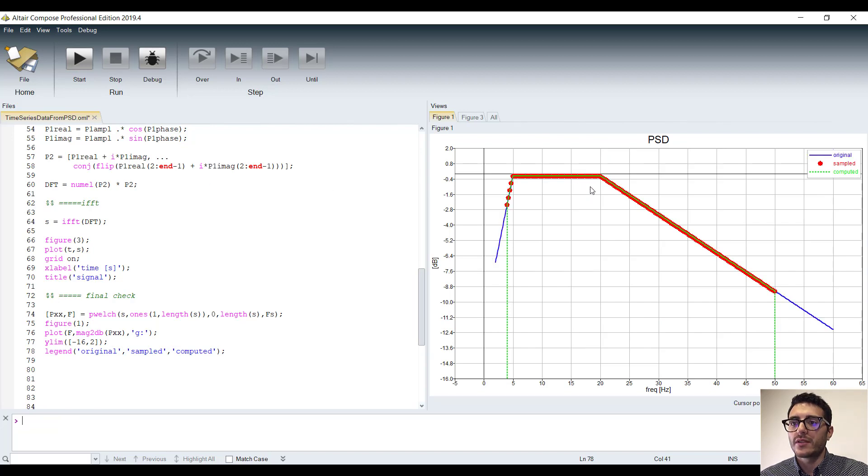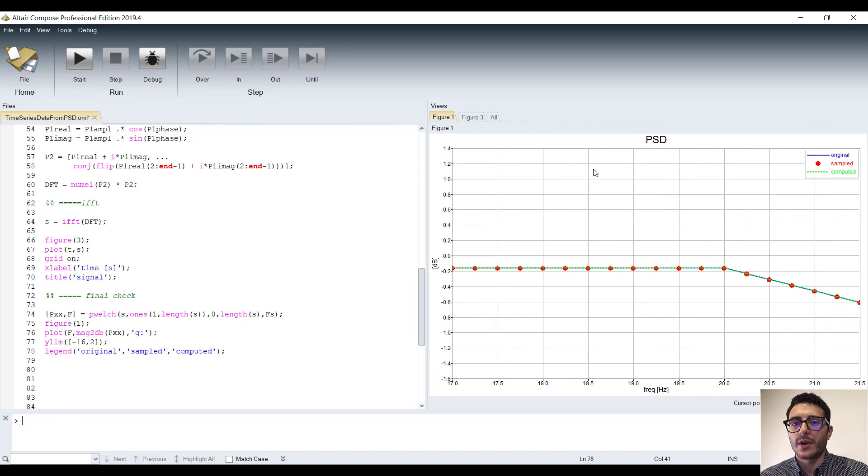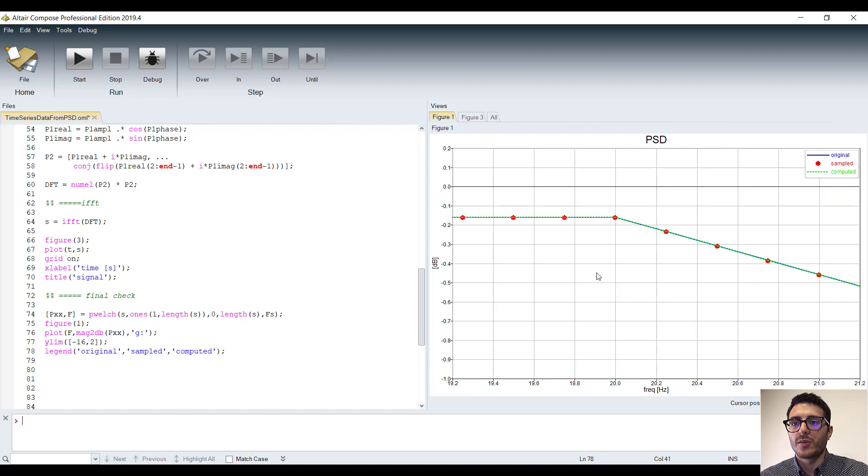Zooming the plot, we can see that the power spectral density we have computed from the signal is completely overlapped to the sampled one.